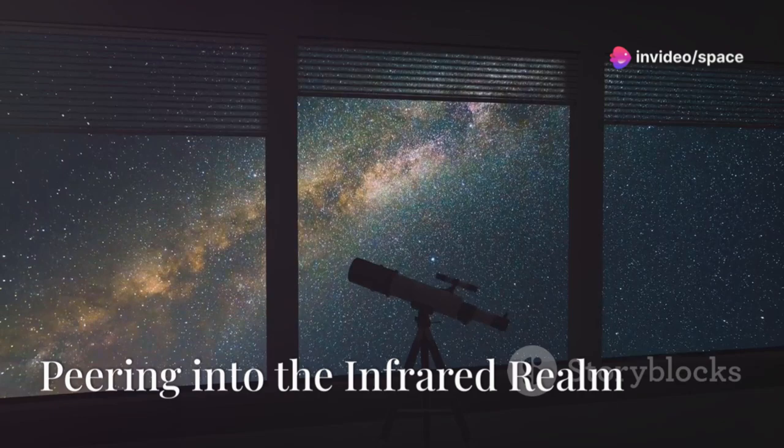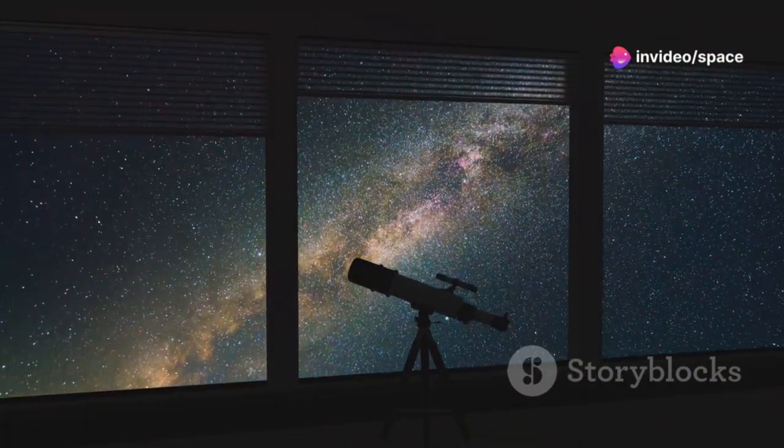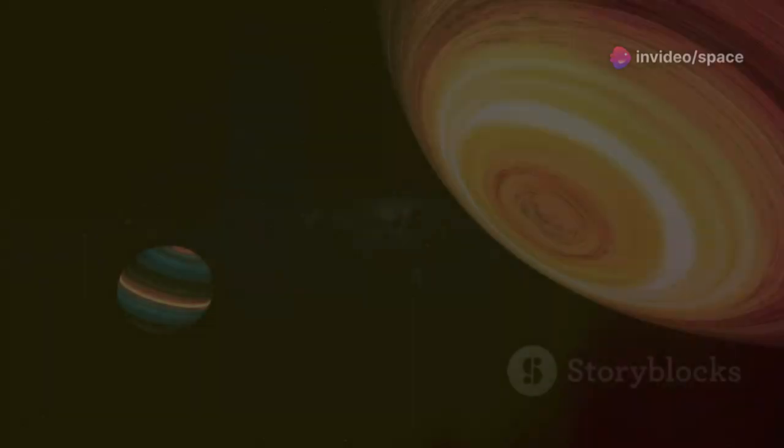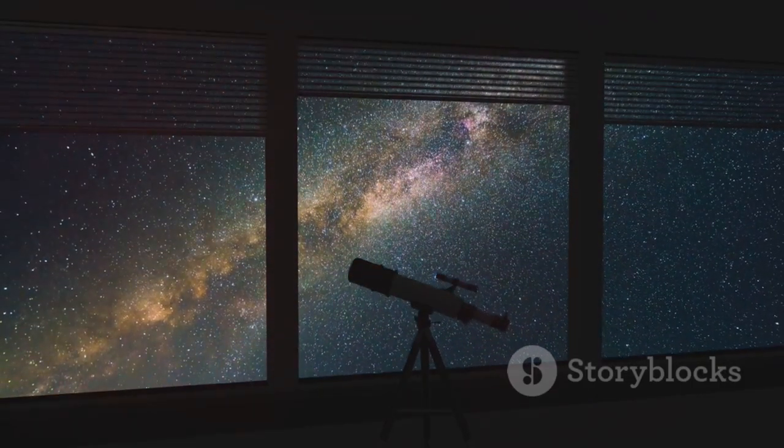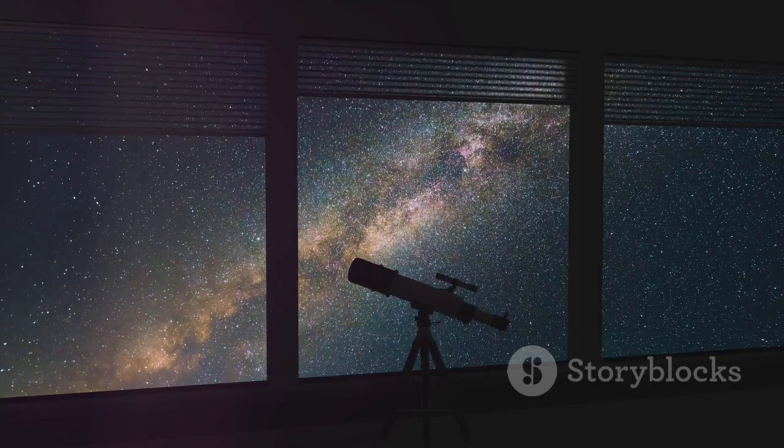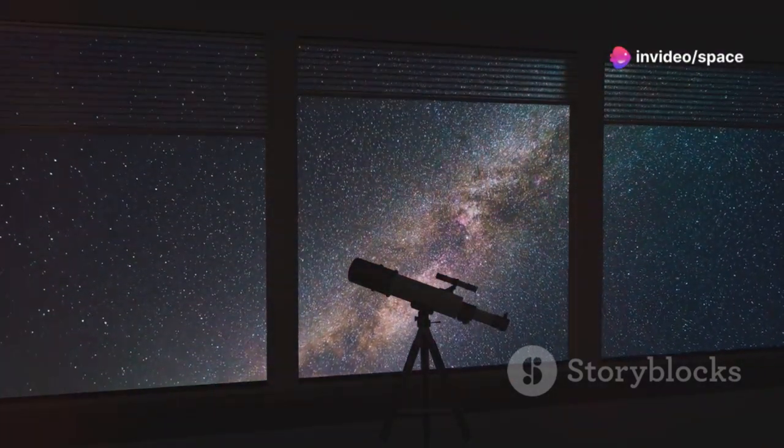The James Webb Space Telescope possesses a remarkable ability to see the universe in infrared light. This is crucial for several reasons. Infrared light can penetrate clouds of gas and dust that obscure visible light, allowing JWST to peer into the hearts of star-forming regions.